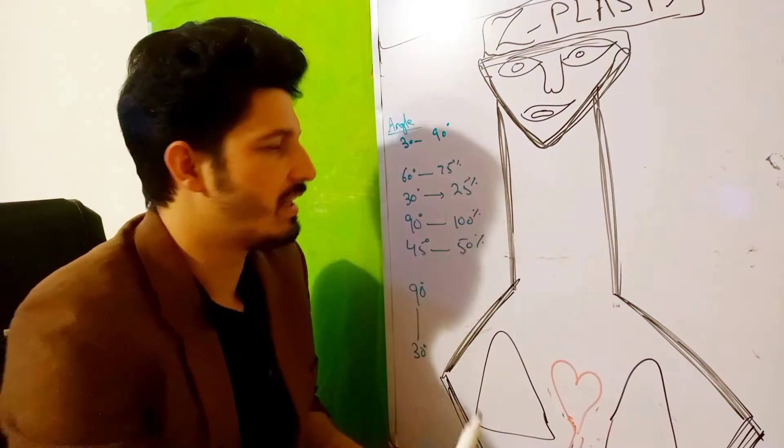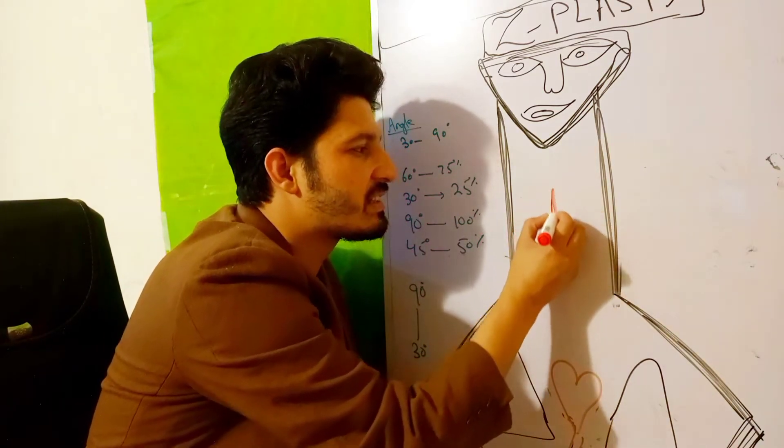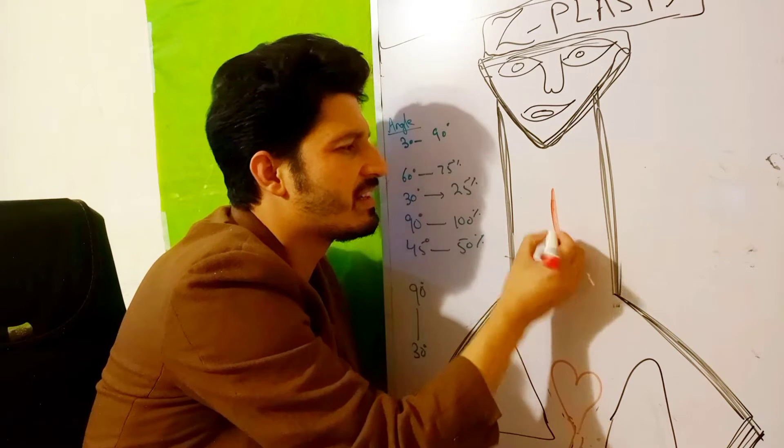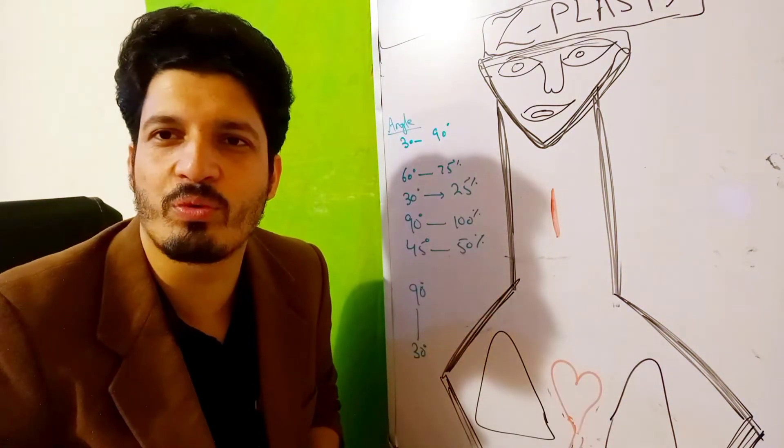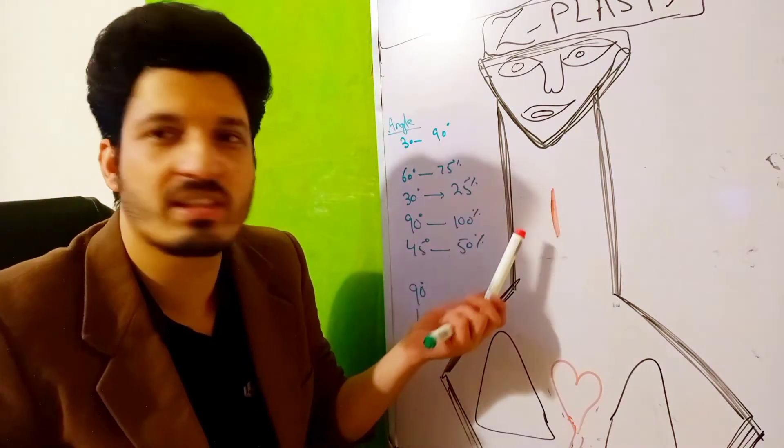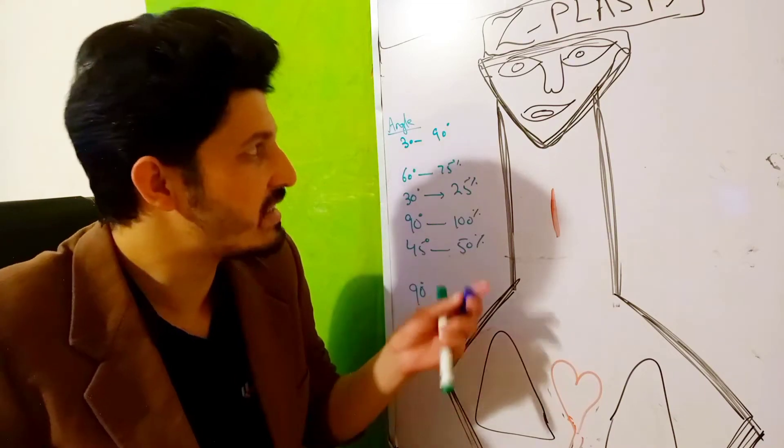In this scenario, you are given a linear scar with contracture, and we are going to perform Z-plasty for this contracture to lengthen it.